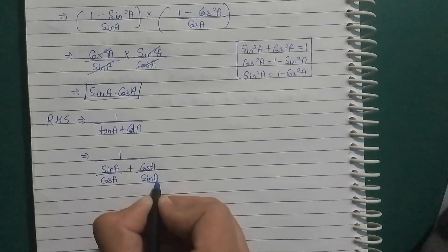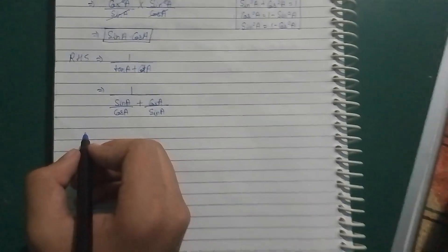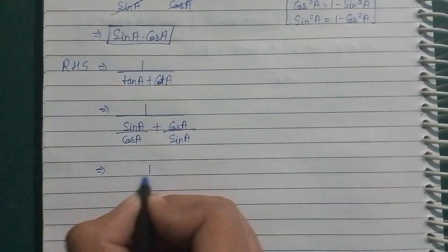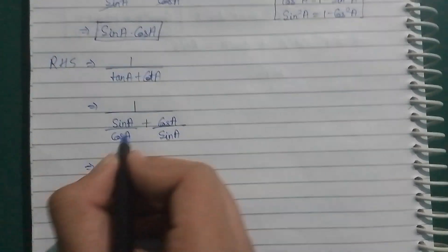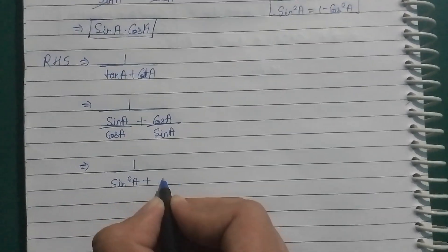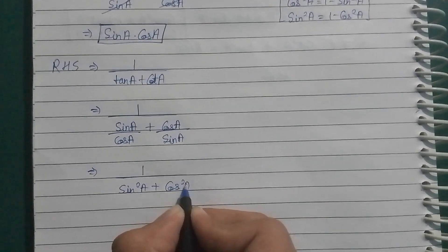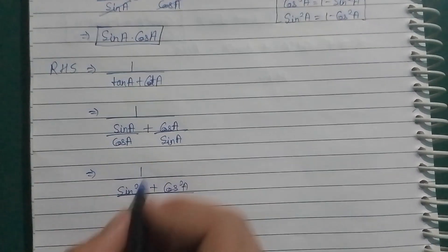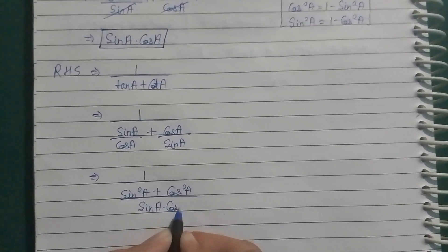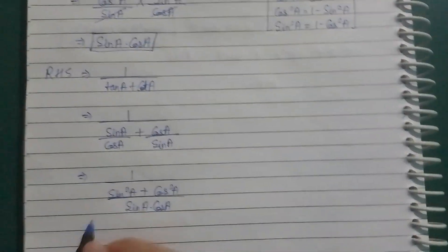Okay. Next step: we can write 1 by, sin A LCM will be there, sin square A plus cos square A upon sin A into cos A. Here sin square A plus cos square A equal to 1. That we know.